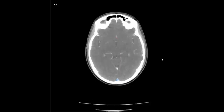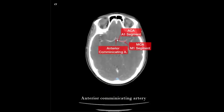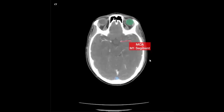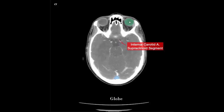Anterior communicating artery. Superior sagittal sinus, anterior communicating artery, right and left middle cerebral artery. Middle cerebral artery, right and left globe. Right and left internal carotid artery, basilar artery, right and left globe.